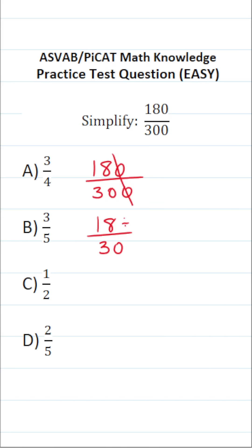You should be able to say to yourself, well, 18 is divisible by 6, and likewise, 30 is divisible by 6. 18 divided by 6 is 3. 30 divided by 6 is 5. So in other words, 180 over 300 reduces to 18 over 30, which reduces to 3 fifths. So the answer to this one is B.